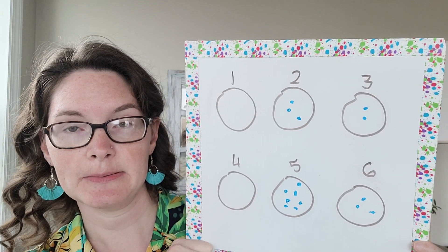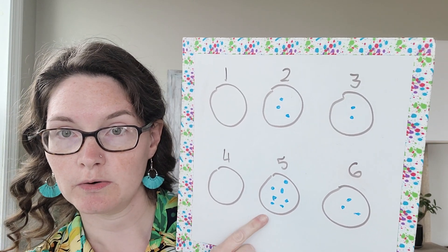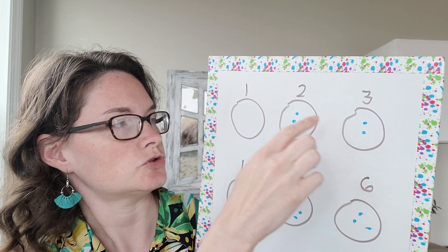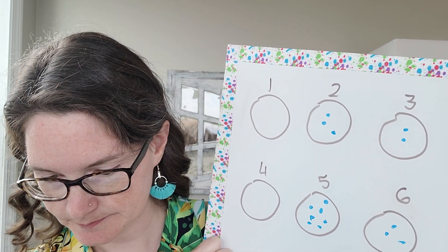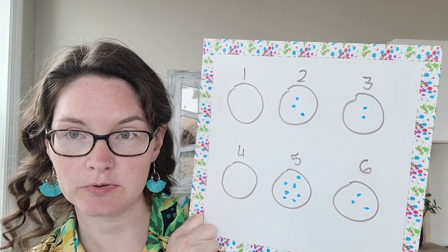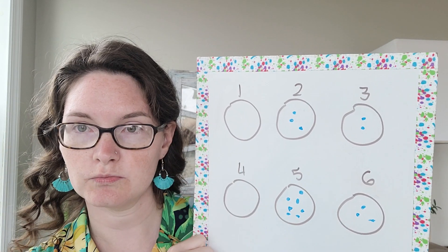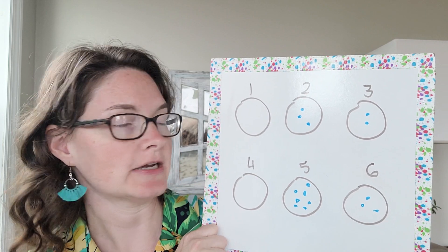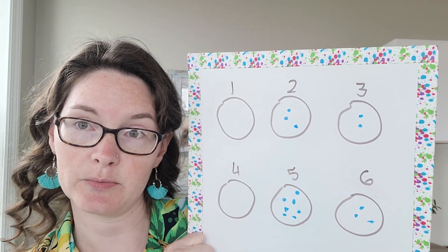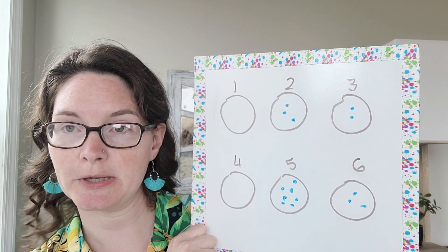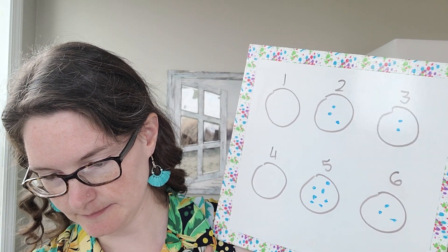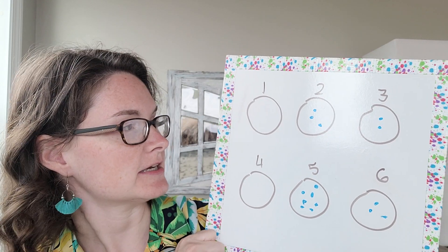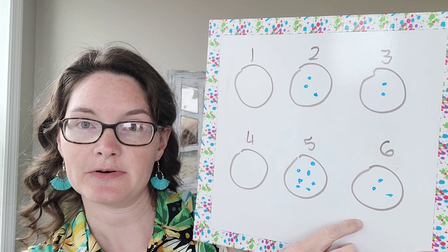Talk about your results - your results will probably be a little different than mine. What do they notice? You can ask questions: How many pancakes had more than four blueberries? We just had one. How many pancakes had less than four blueberries? One, two, three, four, five of them had less than four. How many had exactly four? Well in this example, none of the ones I rolled had four blueberries.